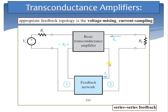Next is the transconductance amplifier. In this type, the input signal is a voltage and the output signal is a current. The appropriate topology is voltage mixing and current sampling. The series connection at both the input and the output gives it the name series-series feedback. The series connection at the input results in increased input resistance, and the sampling of the output current results in increased output resistance. Thus, series-series feedback provides a transconductance amplifier with desirable input and output resistance properties.